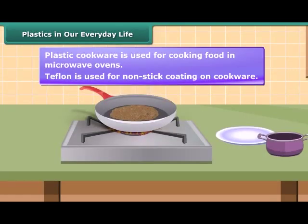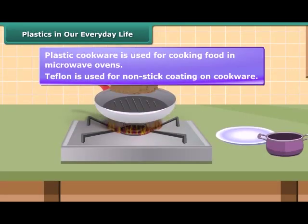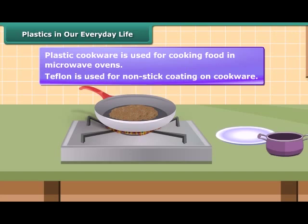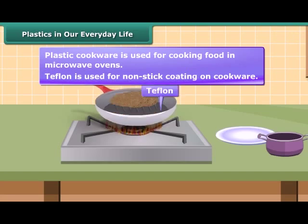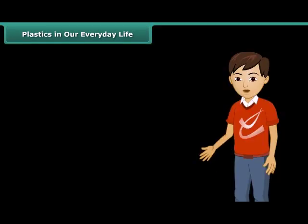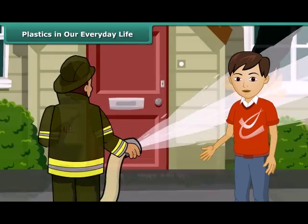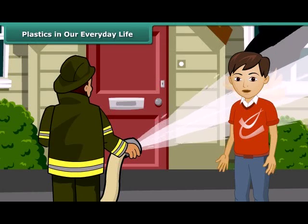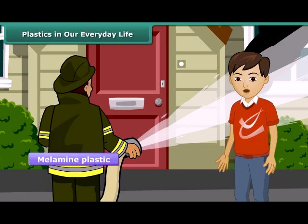Have you ever noticed the frying pan for cooking dosa? You would have seen a black coating on it. It is teflon, which is a special plastic on which oil and water do not stick, thus used as non-stick coating on cookware. There are also fireproof plastics — the uniforms of firemen have a coating of melamine plastic to make them flame resistant.